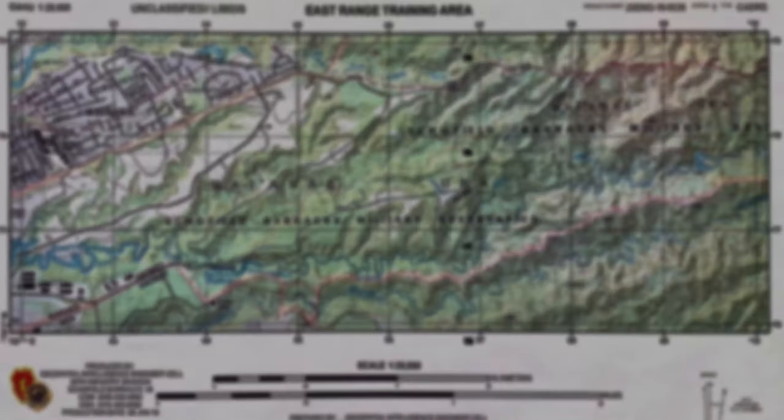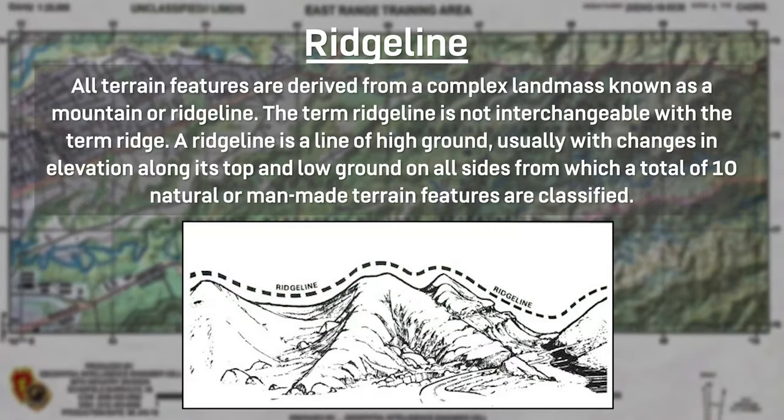To determine where you are you need to be able to self-locate. There are a few methods to self-location. The first method is terrain association. To conduct terrain association you need to identify and understand each terrain feature. All terrain features are derived from a complex landmass known as a mountain or ridgeline — a line of high ground usually with changes in elevation along its top and low ground on all sides, from which a total of 10 natural or man-made terrain features are classified.